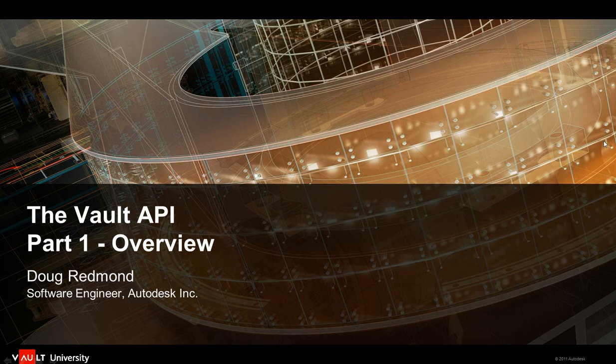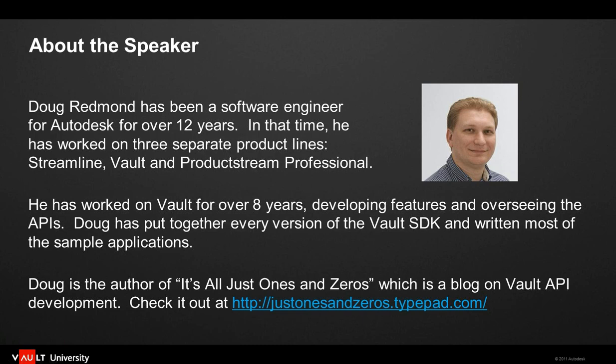A bit about me. My name is Doug Redmond. I'm a software engineer on the Vault product. I work for Autodesk. I've been here for about 12 years now, and I've been working with the Vault product for about eight years, shortly after we acquired them. I've also been involved with the Vault API ever since there has been a Vault API, which goes all the way back to the third release of Vault. I'm one of the Autodesk bloggers. I've got a site that specifically focuses on Vault API development called It's All Just Ones and Zeros. You can find it from the links page on the Autodesk blog page.